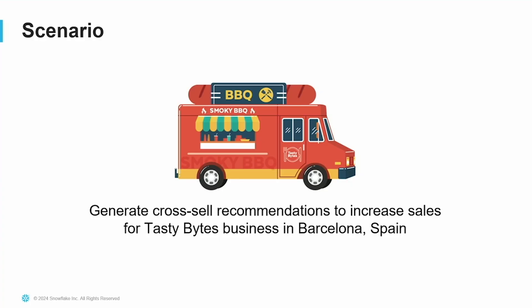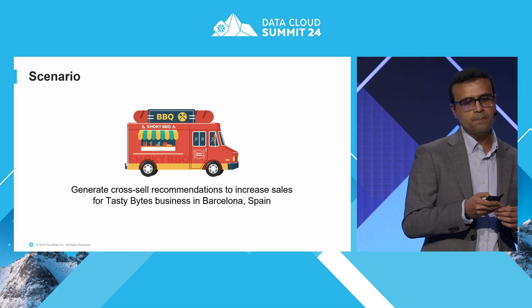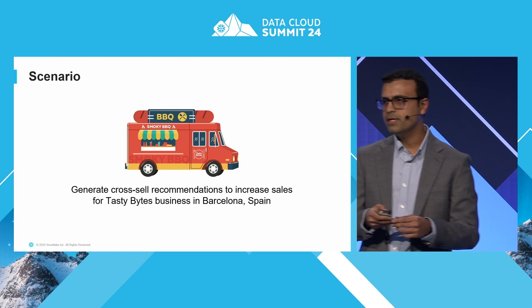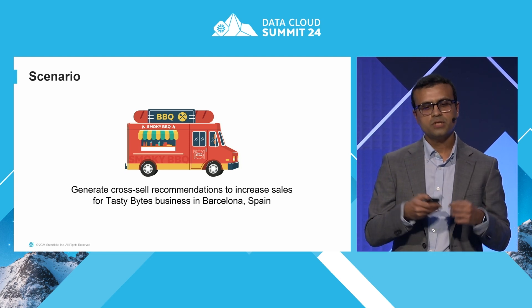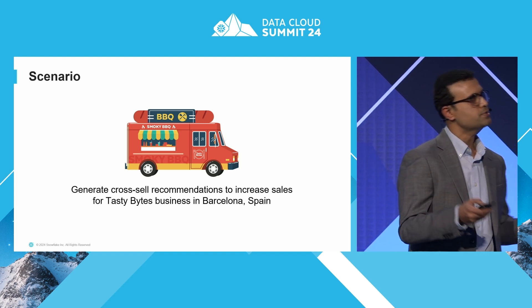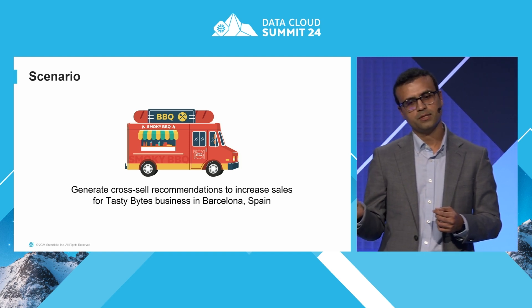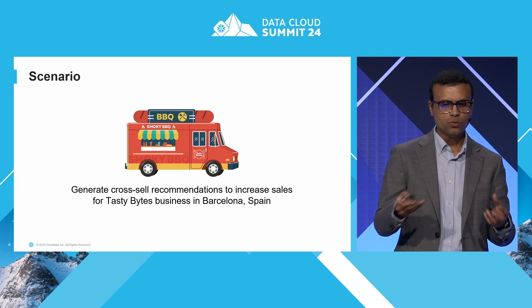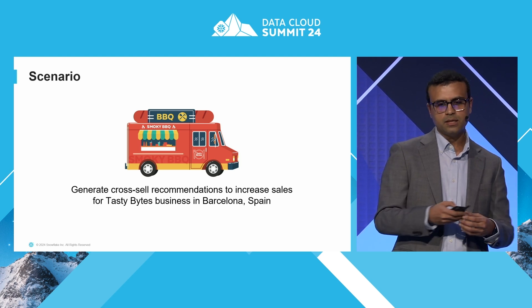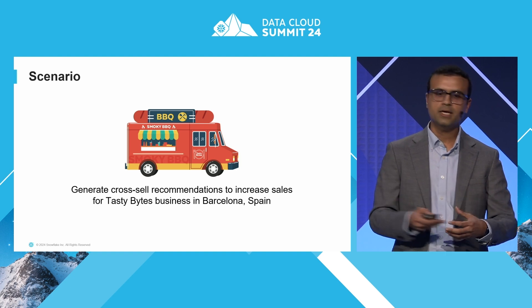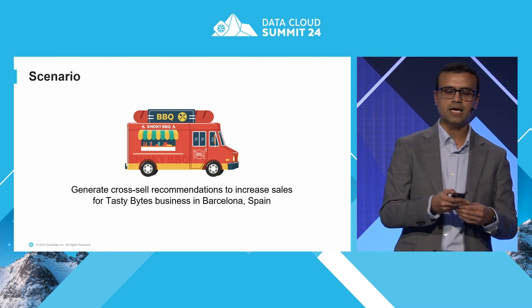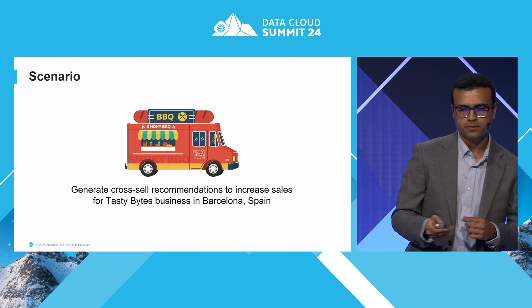In this demo, we are going to a hypothetical food truck business called Tasty Bites. What we're going to focus on is generating a set of recommendations for this business to target a sales campaign in a particular city. At the end of the demo, we want to create tailored outreach campaigns that tell a particular customer about new menu items they would want to try out, and boost sales based on that.